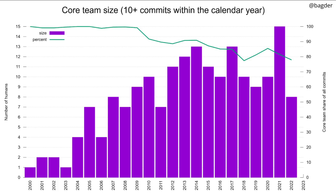If we count people who committed 10 or more times within the same calendar year, we reached 15 persons last year — a new record. Ten commits is an arbitrary number but it suggests more than just a single bug fix and running away. Those 15 people did a little bit more than 80% of the commits last year.